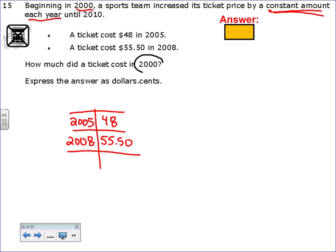The question says, how much did it cost in 2000? They want me to work backwards. Let's figure out what's happening. From 2005 to 2008, that's an increase of 3 years. And from $48 to $55.50, that's an increase of $7.50. That means it's going to be an increase of $7.50 every three years. Well, what is that per year? How many times does 3 go into 75? 25. So that's going to be $2.50 per one year. That means every year, the ticket price increases by $2.50.